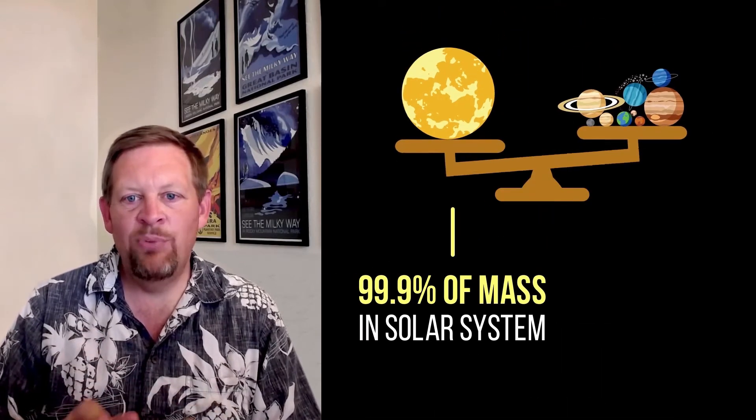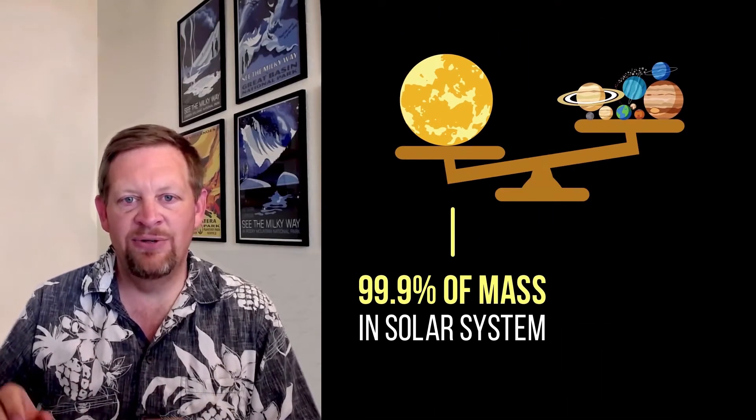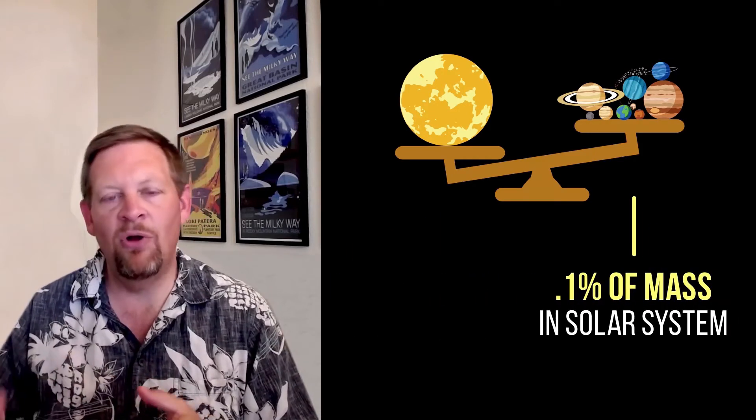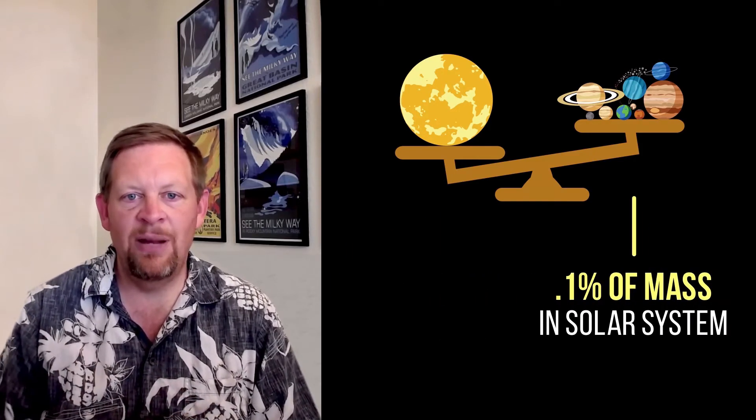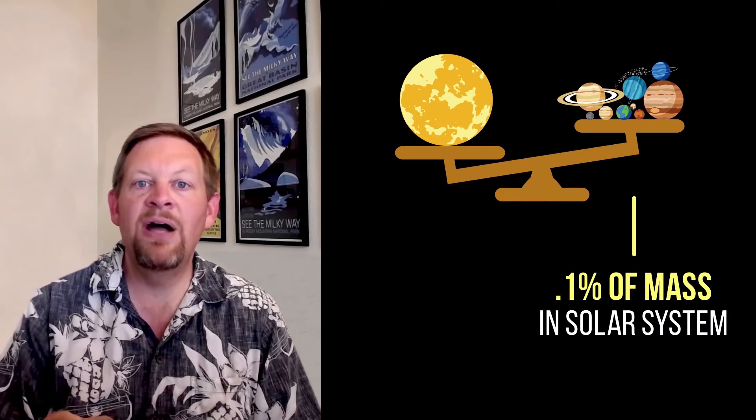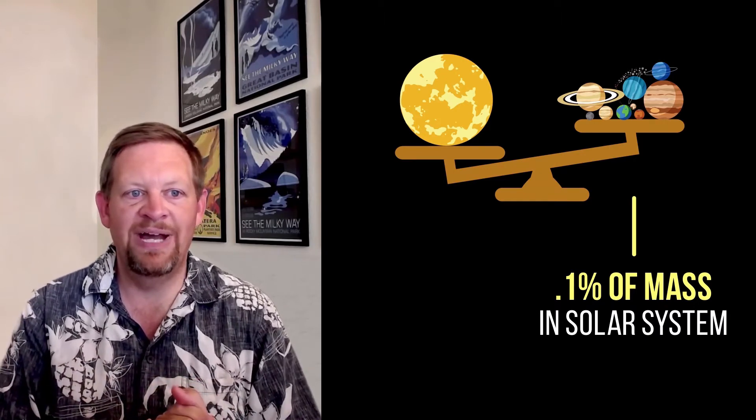About 99.9% of the mass in the solar system is in the Sun. Everything else in the solar system, all the planets, the asteroids, the comets, even us, they make up that tiny little remaining 0.1% of the mass.